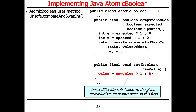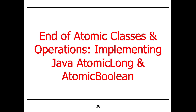Unlike compareAndSet, which only performs the update if some condition is true, set says: I don't care what your current value is — you are now true or you are now false. Armed with this information, you should be in a very good position to implement assignment 1B for the spin lock, because that's exactly what you need in order to do that.